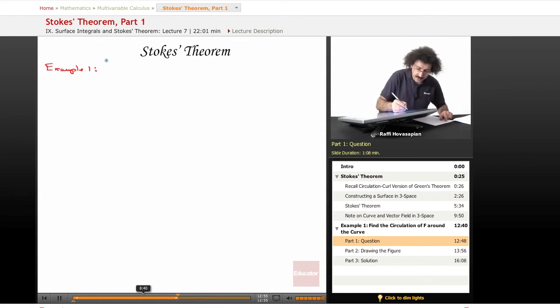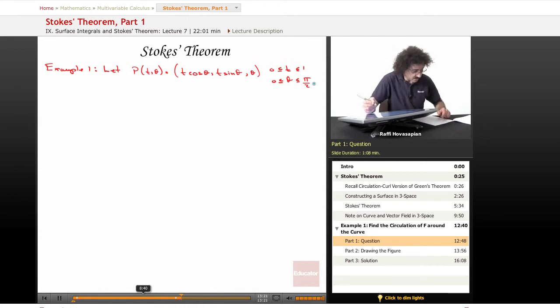Example one. Let P(t,θ) = (t cos θ, t sin θ, θ) for t greater than or equal to 0, less than or equal to 1, and θ greater than or equal to 0, less than or equal to π/2.